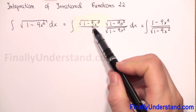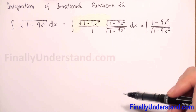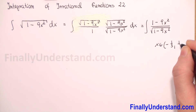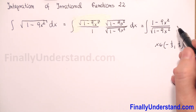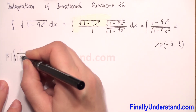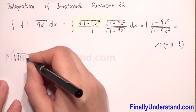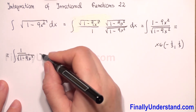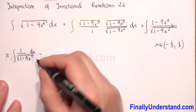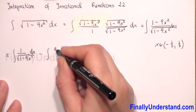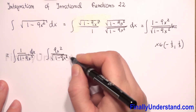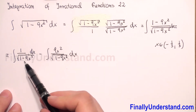Of course, whatever is under the square root must be a positive value, so x must belong to the interval from -1/3 to 1/3. Next, we can rewrite our integral as two integrals: the integral of 1 over √(1-9x²) dx, minus the integral of 9x² over √(1-9x²) dx.